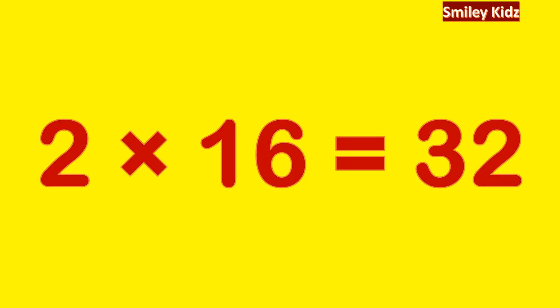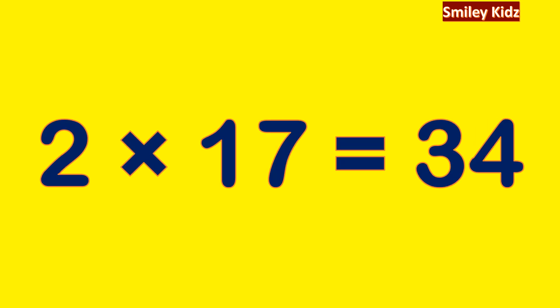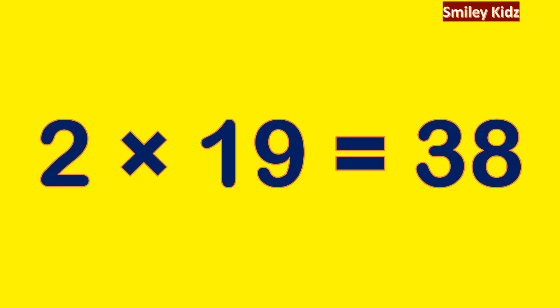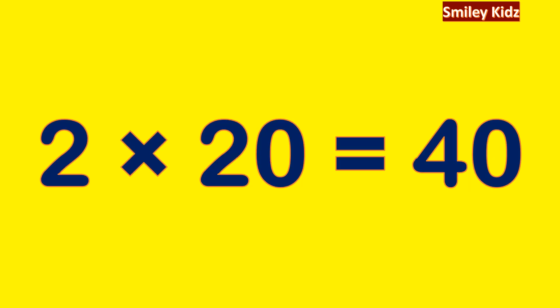2 sixteens are 32. 2 seventeens are 34. 2 eighteens are 36. 2 nineteens are 38. 2 twentys are 40.